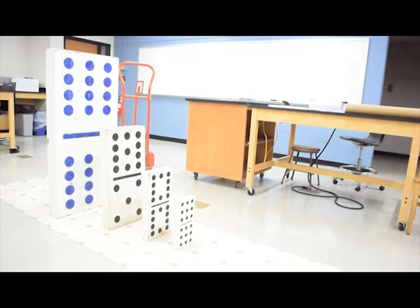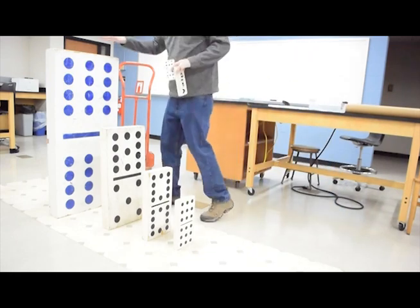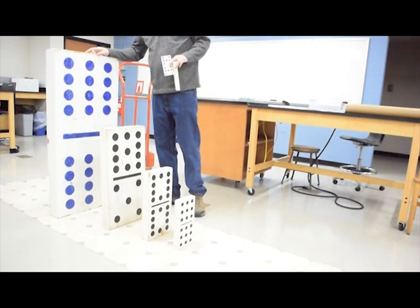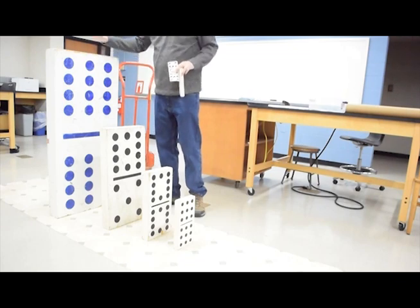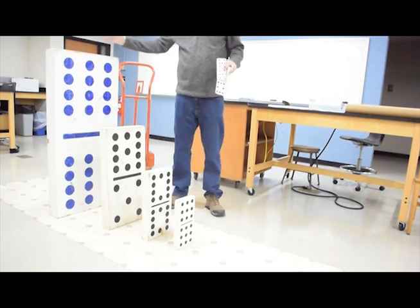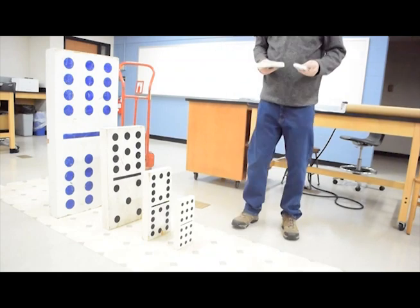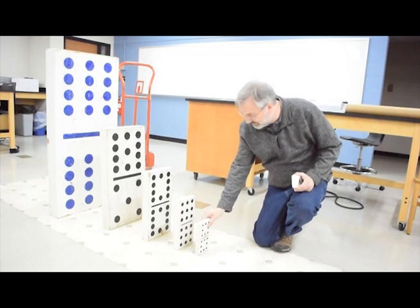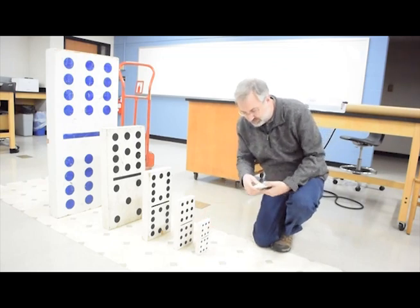So the tallest domino here is four feet tall. It's made up of a sheet-and-a-half of three-quarter-inch OSB. It weighs about a hundred pounds, I'm guessing. That's the twelve, the double twelve, double eight as I said before, and the double seven.